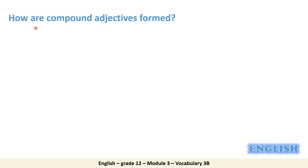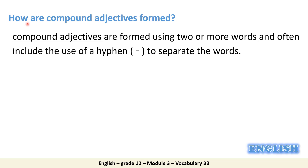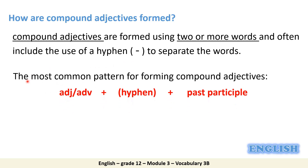Now it's time to know how we can form a compound adjective. A compound adjective is made up of two or more words, and most of the time these words are separated by a hyphen. The most common way to structure a compound adjective is to have an adjective or an adverb, then a hyphen, and after that the past participle form of a word.